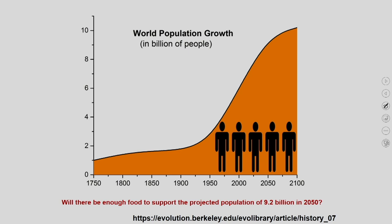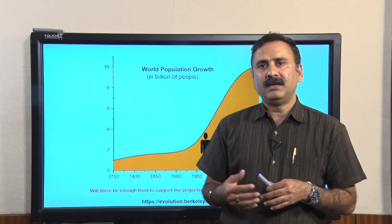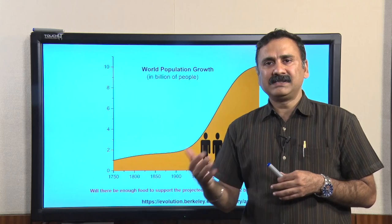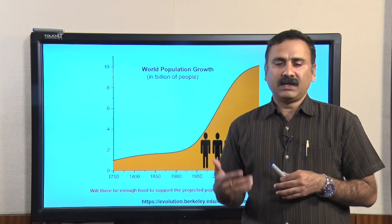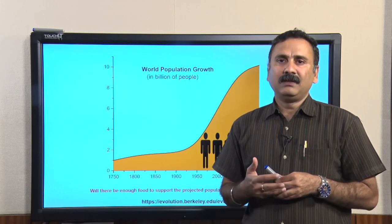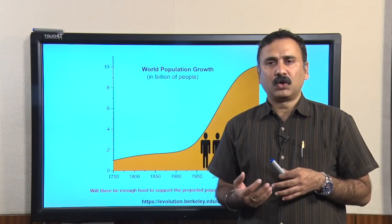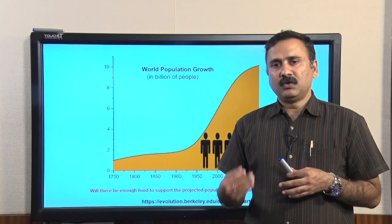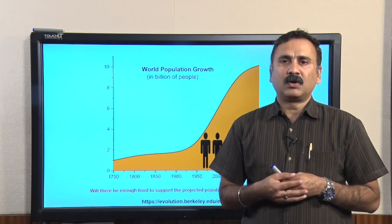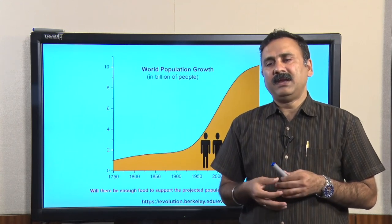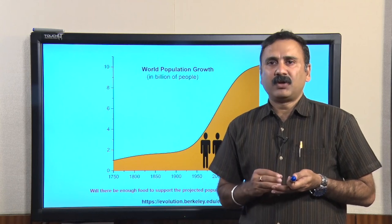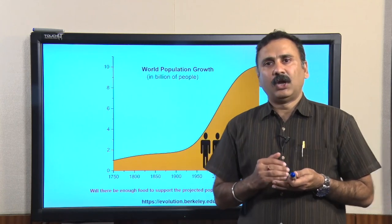Land is limited, so you cannot increase productivity simply by having more and more farmland. You have to increase the productivity, and that is where biotechnology is going to play a crucial role — improving crop yield by either increasing productivity or decreasing losses.